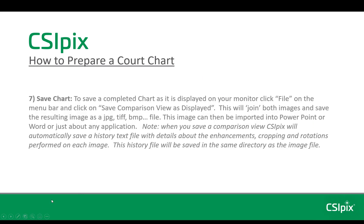When you have the side-by-side images annotated, you can save that as a chart. To save the completed chart as it's displayed on your monitor, click File on the menu bar and click Save Comparison View as displayed. This will join both images and save the resulting image in a format that you choose, like JPEG, TIFF, or Bitmap. This image can then be imported into PowerPoint or Word. Note: when you save a comparison view, CSIPIX will automatically save a history text file with details about all the enhancements, cropping, and rotation performed on each image. The history file will be saved with the same name and in the same directory as the image file, just with a .txt extension.